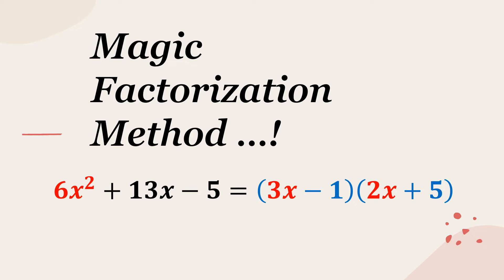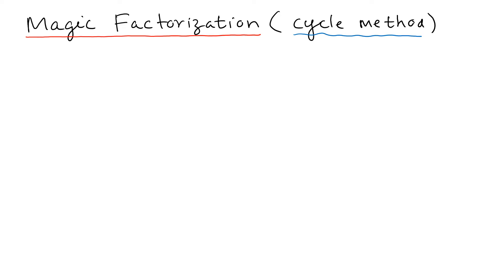In this video we are going to learn a new method to factor trinomials with a not equal to 1. We're going to call the method the 'magic factorization,' or you can also call it the 'cycle method.' The reason is that when you study the method, those numbers can go in a cycle. So we can call it the cycle method.